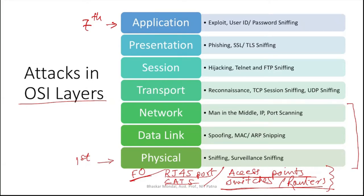Before discussing the intermediate five layers, let's look at attacks on these two layers first. At the application layer, attacks can include exploitation — where the application runs malicious code in the background — or someone illegally collecting a user's ID and password and accessing their account.